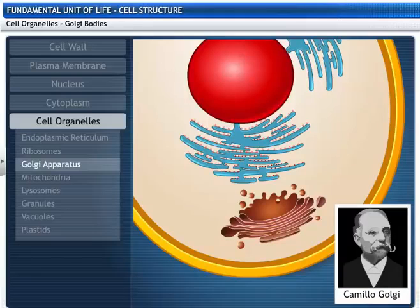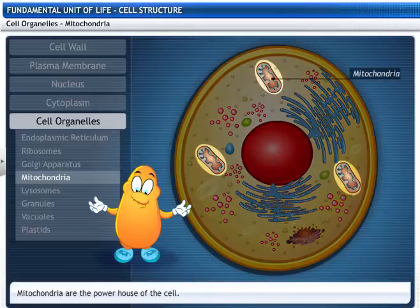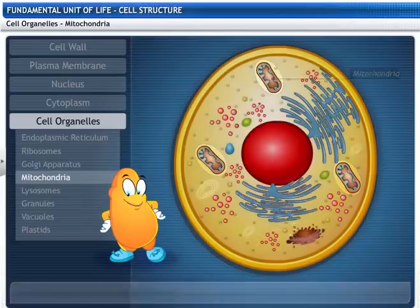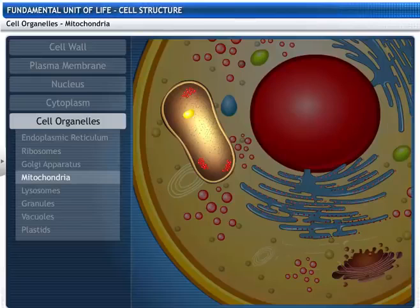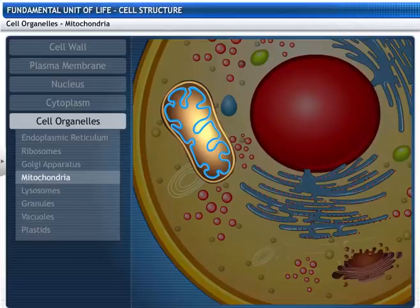Golgi bodies are also known for the synthesis of glycoproteins. This is the powerhouse of the cell, called mitochondria. They have their own DNA and ribosomes to synthesize respiratory enzymes. These enzymes oxidize glucose molecules to produce energy in the form of adenosine triphosphate, or ATP, which is used for chemical activities and mechanical work. Mitochondria have outer and inner membranes; the inner membrane folds into cristae, creating more area to make ATP.